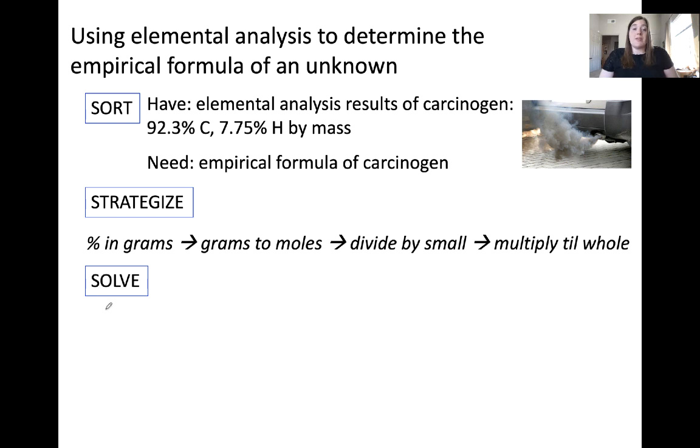The first step is percent in grams. If we have a 100 gram sample, that's a big assumption here. If we have 100 gram sample of our unknown, we know from our elemental analysis that this will result in 92.3 grams of carbon and 7.75 grams of hydrogen. By choosing 100 grams, it helps us to simplify the math and easily adapt these percentage values to mass.